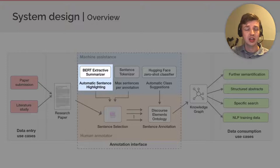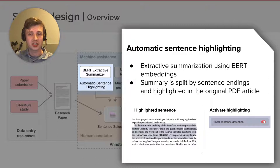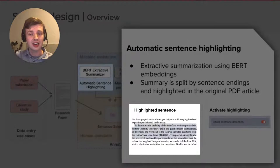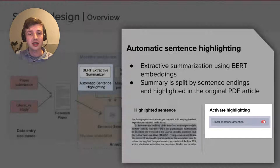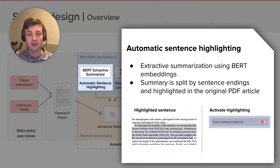Now we'll discuss the three machine assistant components, starting with the automatic sentence highlighting. The first smart component automatically highlights potentially important sentences in the paper. For that, the paper is first automatically summarized using an extractive summarization tool. This created summary is split by sentences and each of those sentences are highlighted in the PDF file. Here you can see the highlighted sentences within the paper. And here you can see a button to disable the highlights in case they are not helpful. Highlights only serve as suggestions and it's therefore not mandatory to use them.